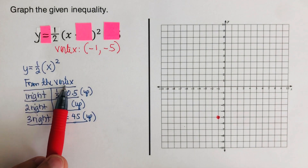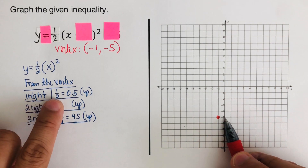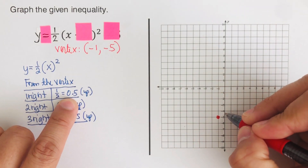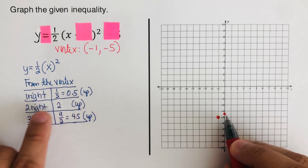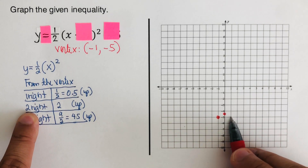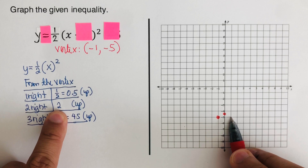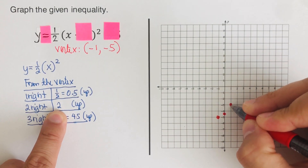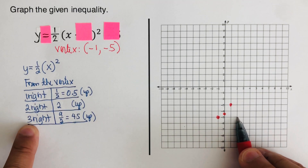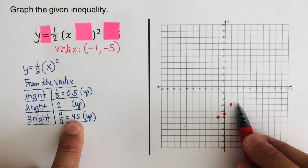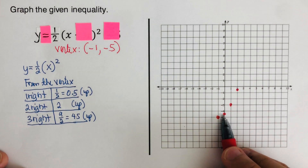From the vertex: go 1 right and 0.5 up for the first dot. Then 2 right and 2 up for the next dot. Then 3 right and 4.5 up for the next dot. We draw these dots across the axis of symmetry to mirror the parabola.